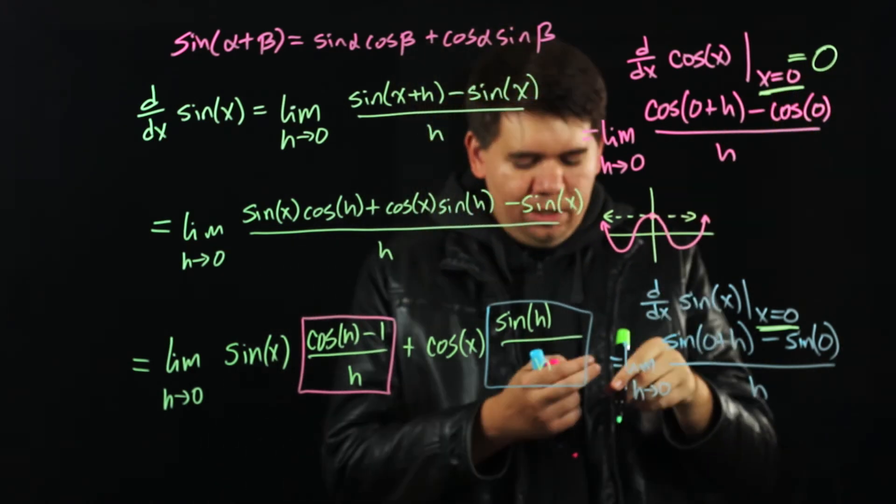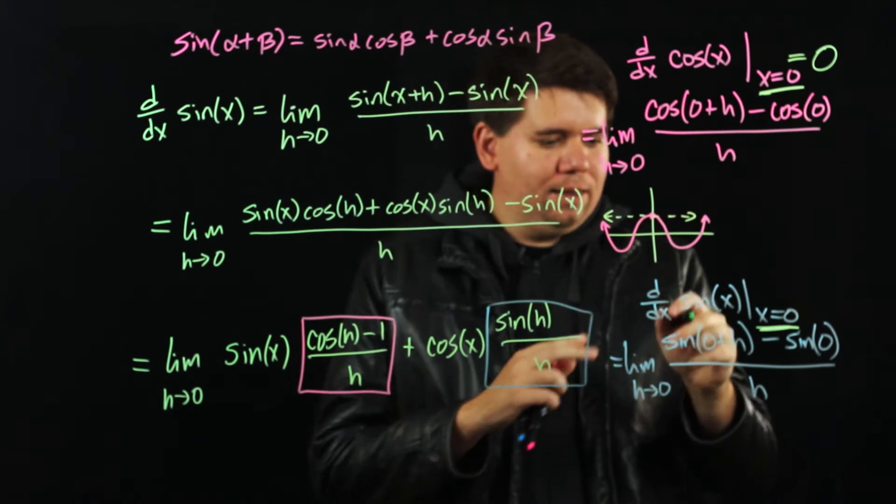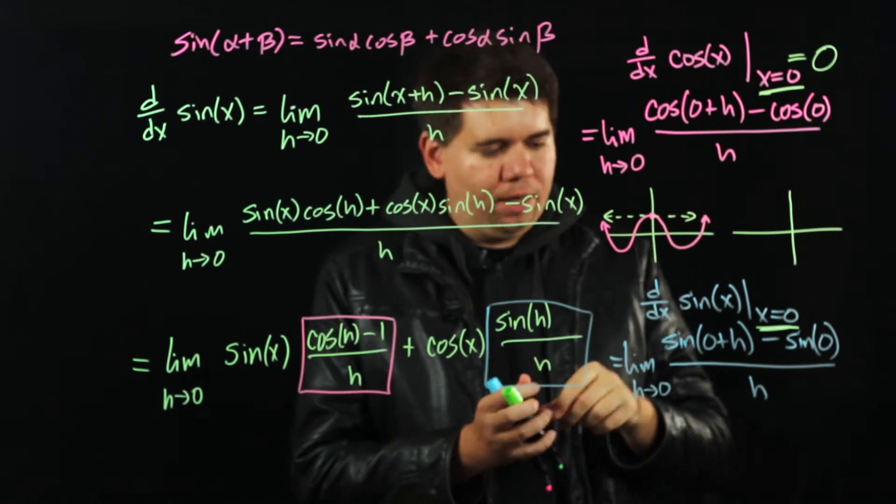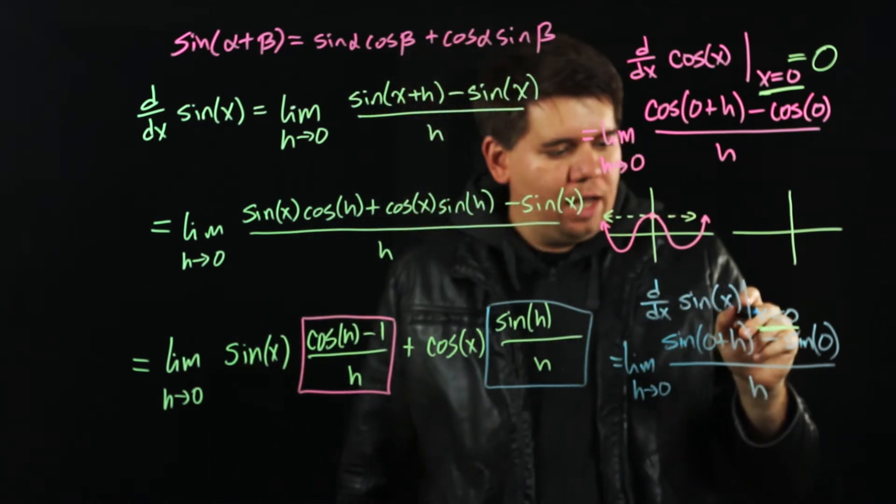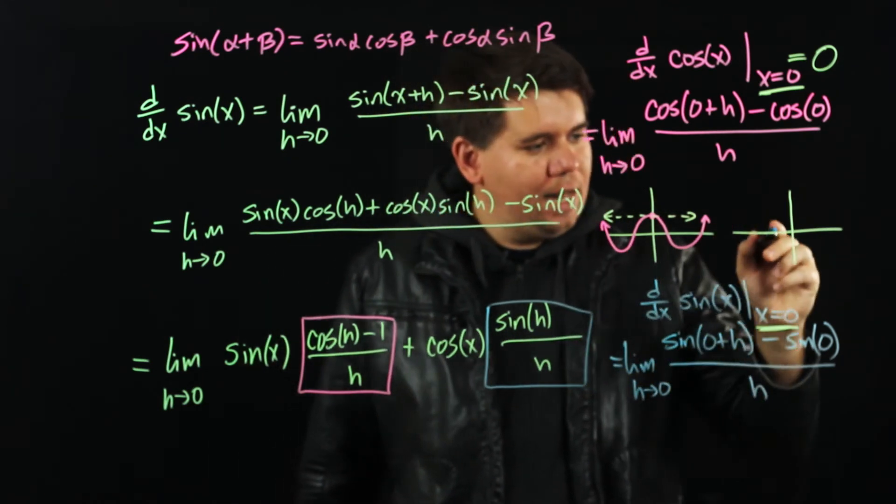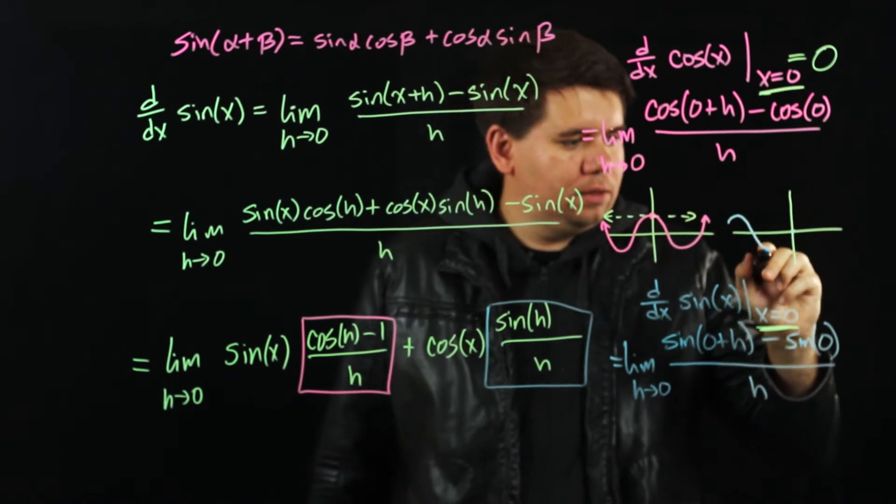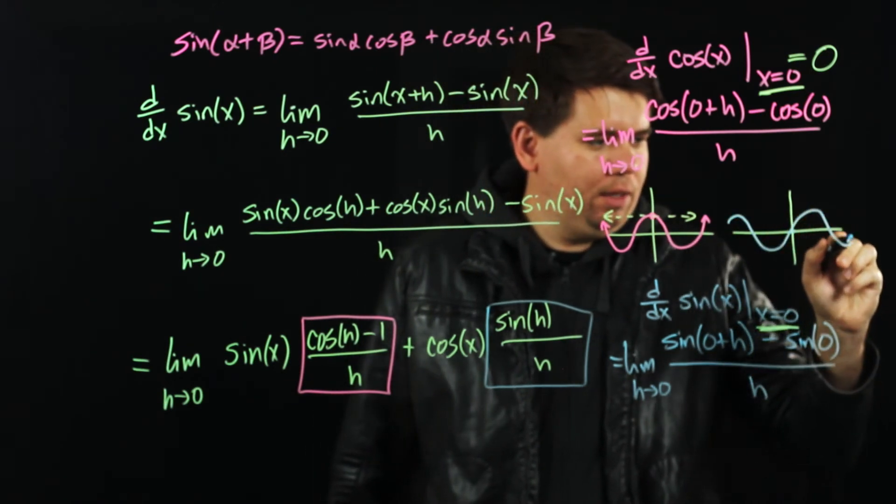In a similar way, if I look at sine, the derivative of sine at x equals 0 is just the slope of my tangent line there. What does sine look like at x equals 0? Well at 0, I'm at 0. My sine graph looks something like this.